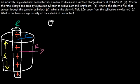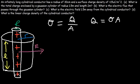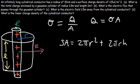We know that the surface charge density sigma is equal to the charge divided by the area, so the charge Q is equal to sigma times A. This area is not the area of the circle on top — it's the lateral area. The surface area of a cylinder is 2πr² + 2πrh, where 2πr² covers the top and bottom circles, and the lateral area is 2πrh. This is what we need to use.